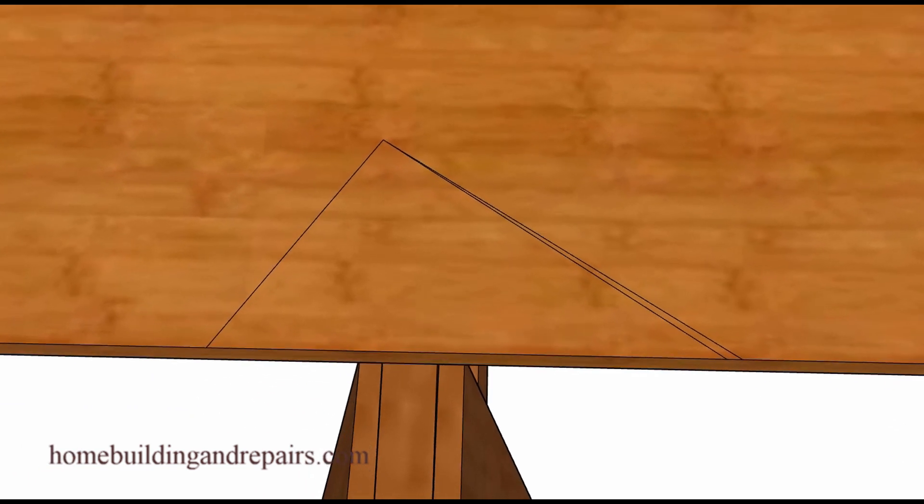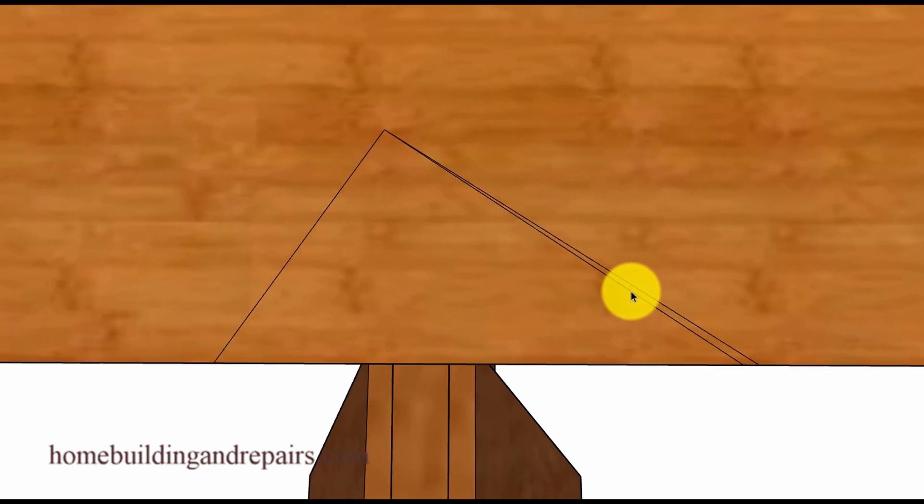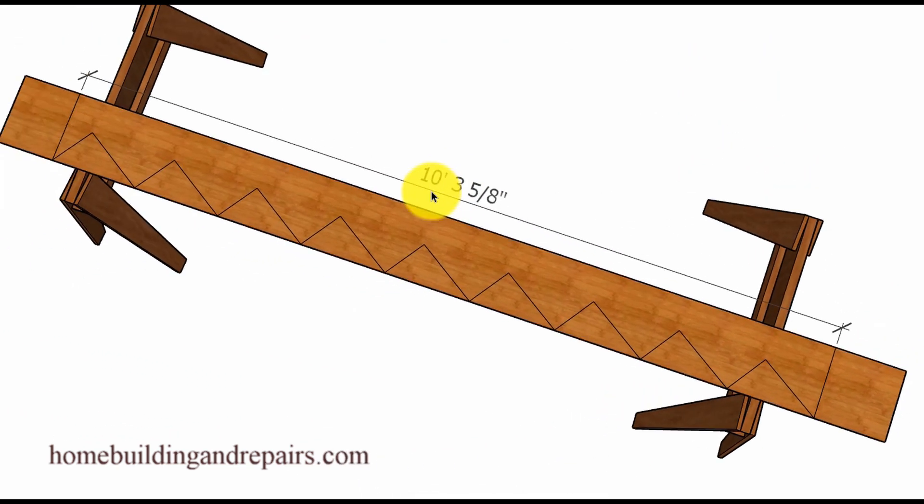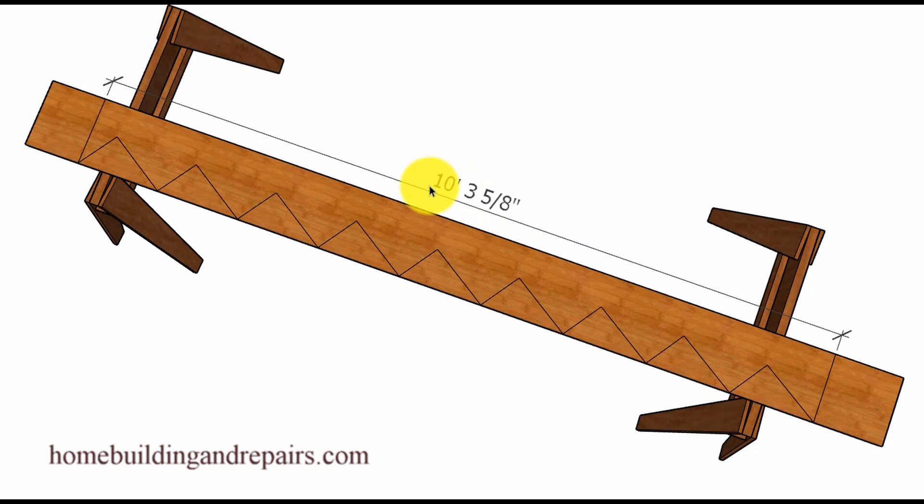However, before we lay that out, let's just go ahead and take a look at our lines. And of course the line on the inside here represents the square line created by the square framing square, and the line on the other side represents the line from the bent framing square. And as we lay out our stringer, we're going to end up with something like this.